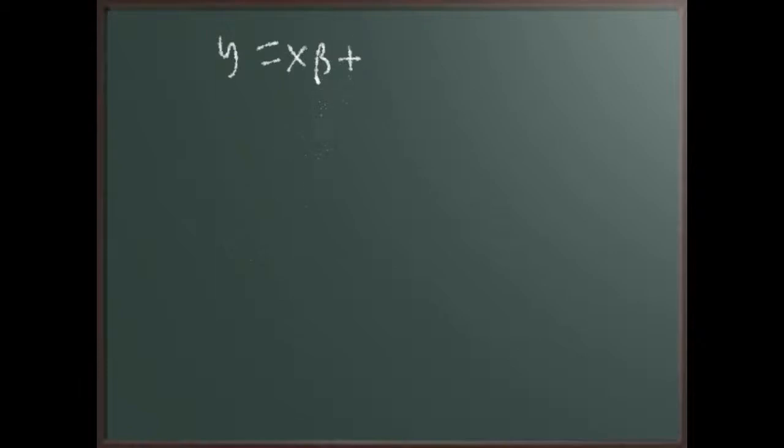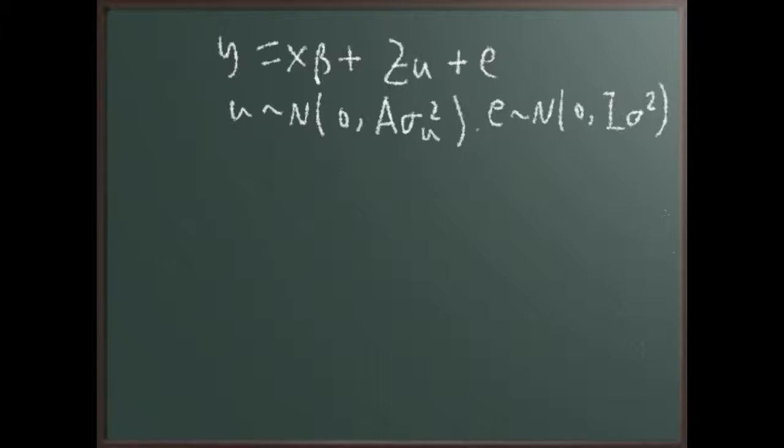So y is x beta plus z u plus e, where u follows normal zero, a sigma u square, and e is normal zero, i sigma square. So the variance of y, if you write it down, is actually—fixed effects doesn't have any variance—just variance of this term.